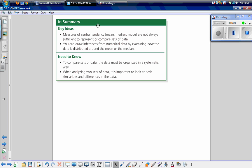In summary, our key ideas: measures of central tendency such as the mean, median, and the mode are not always sufficient to represent or compare sets of data. You can draw inferences from numerical data by examining how the data is distributed around the mean or the median. To compare sets of data, the data must be organized in a systematic way, like make yourself a line plot or put your data in order from smallest to greatest. When analyzing two sets of data, it's important to look at both the similarities and the differences of the data. In this case, our similarities were the mean, the median, and the mode. But our differences was our range and the dispersion, as we saw on the line plot.